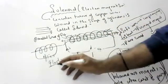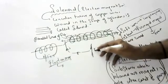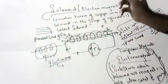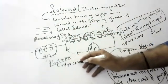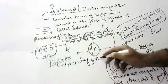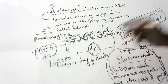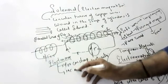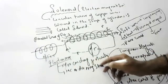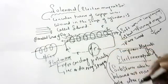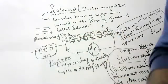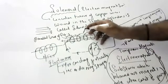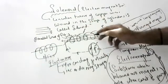Electromagnets have more advantages than permanent magnets. Advantage one: you can change the polarity. If you send current in one direction, north and south poles form accordingly; if you reverse the current, the poles reverse. Advantage two: you can increase or decrease the magnetic strength by using a stronger or weaker battery.